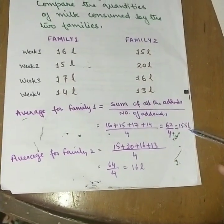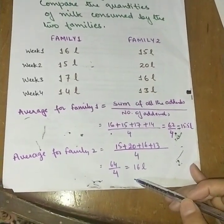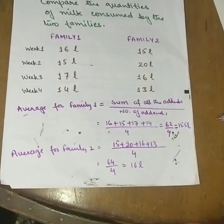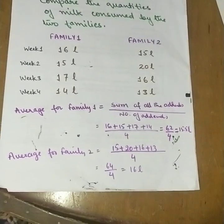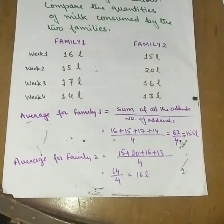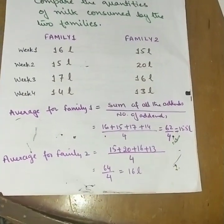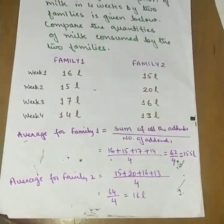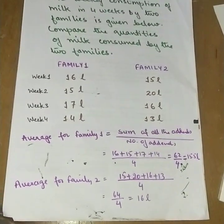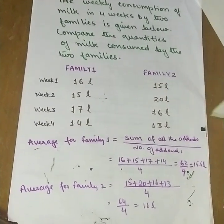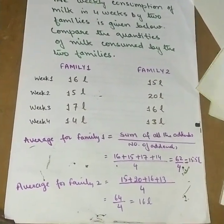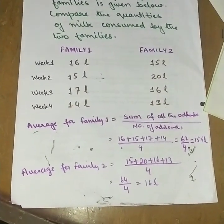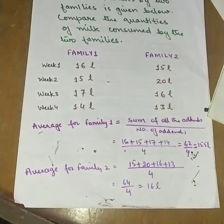We can now compare easily: Family 1 consumed less milk than Family 2, and Family 2 consumed more milk than Family 1. By using averages, we can compare different groups. Go through the average rules again and solve your questions. If you find any difficulty, ask in the comment box.